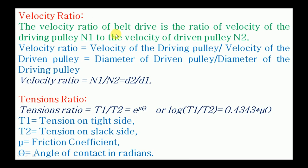Next, the velocity ratio of the belt drive is the ratio of the speed of the driving pulley N1 to the speed of the driven pulley N2. This equals the diameter of the driven pulley to the diameter of the driving pulley: N1/N2 = D2/D1. This is important for finding velocity or diameter when one is unknown.